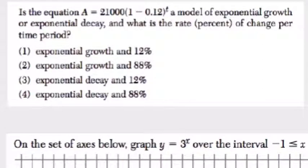In this next one, they're giving us the equation, and they're asking us to analyze it. They say A equals 21,000 times 1 minus 0.12 to the T power.